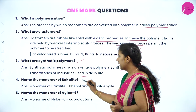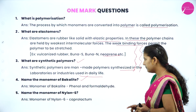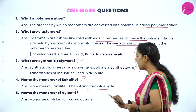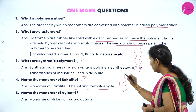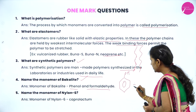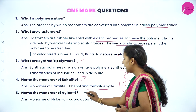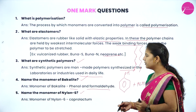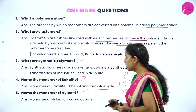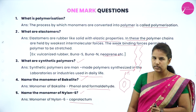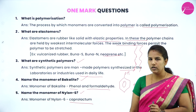Name the monomers of Bakelite. To prepare Bakelite, we use phenol and formaldehyde as monomers. Phenol is a benzene ring with an OH group, and formaldehyde is HCHO. Next, the monomer of Nylon-6 is caprolactam.